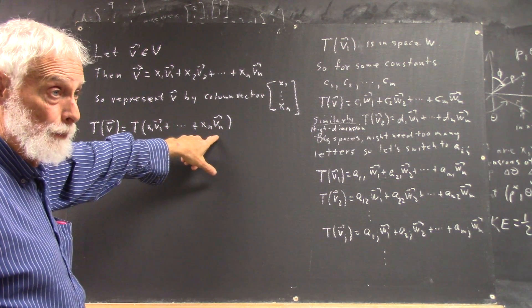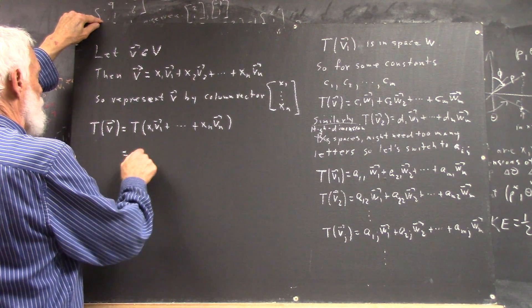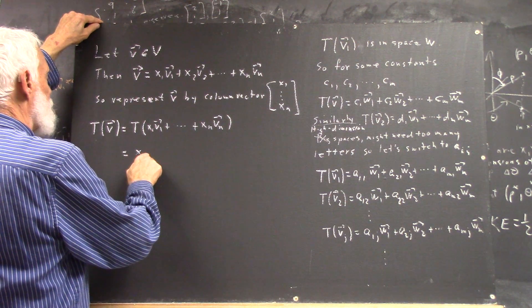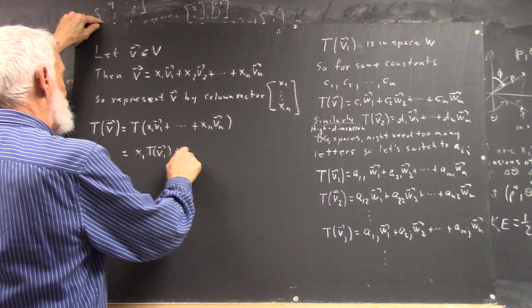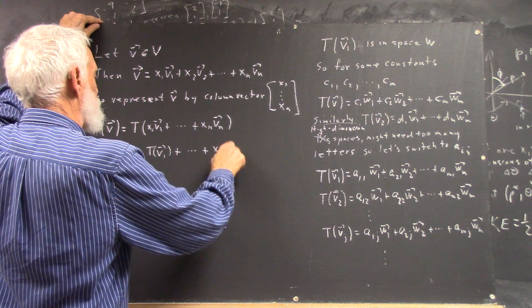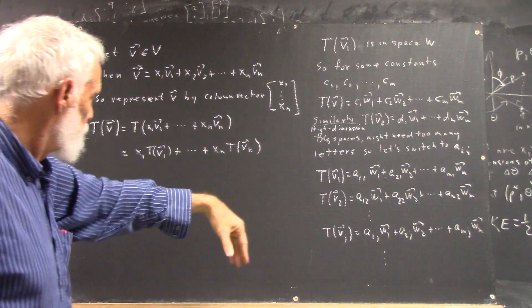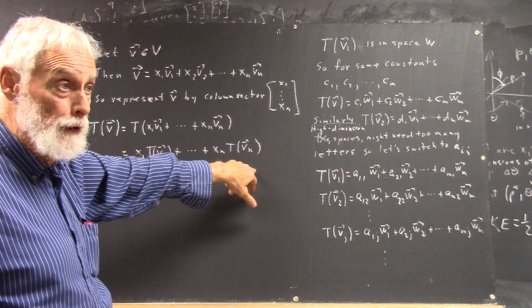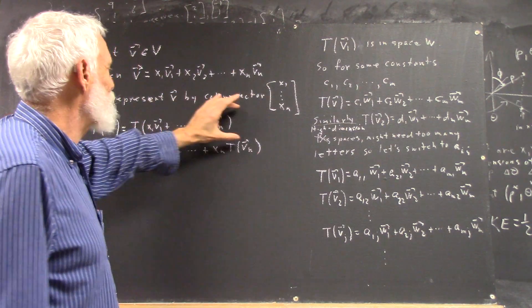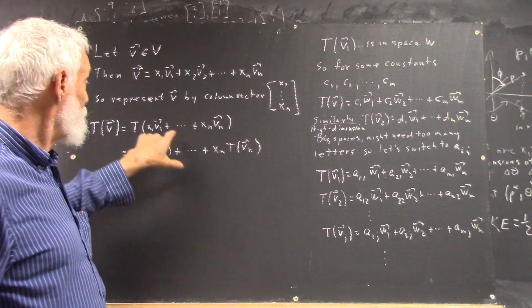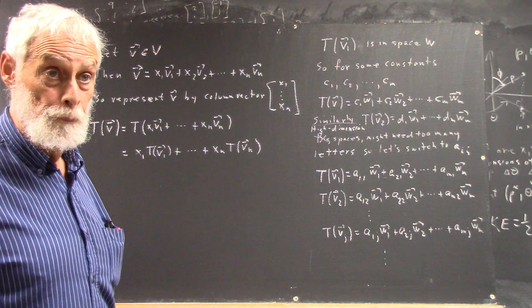But there's a transformation by linearity, which you've got to apply a number of times and use kind of mathematical induction. But anyhow, that's x1 times T(v1) plus dot dot dot xn*T(vn), right? Because of linearity, this thing acts kind of like it distributes over plus, and then your constants can come out. That's what your two properties of linearity effectively do, okay?